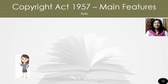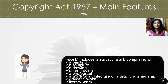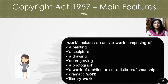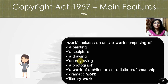Let us now look at the main features of the Copyright Act of 1957. Under the Copyright Act 1957, the term 'work' includes an artistic work comprising of a painting, a sculpture, a drawing including a diagram, a map, a chart or a plan, an engraving, a photograph, a work of architecture, or artistic craftsmanship.